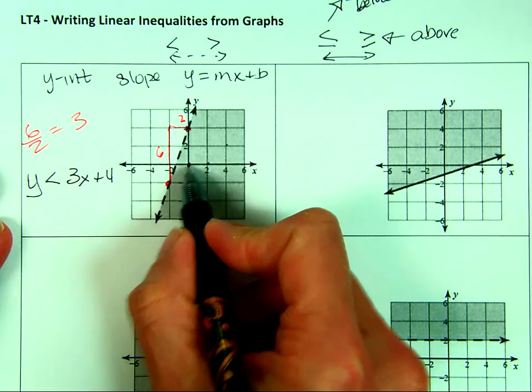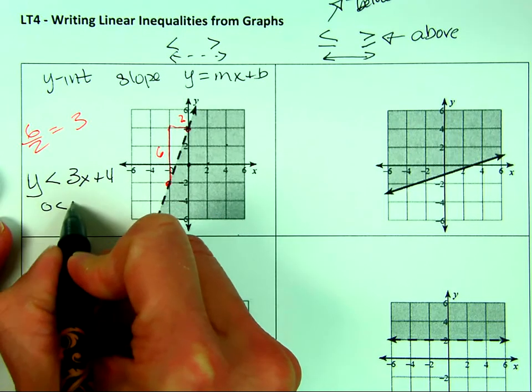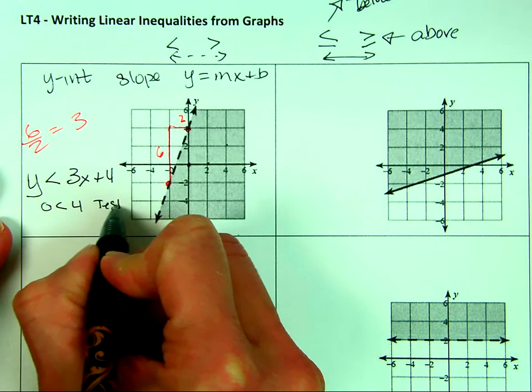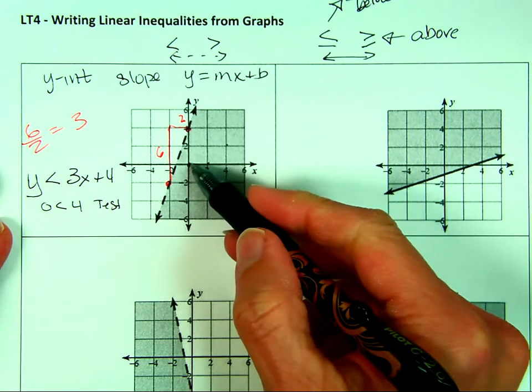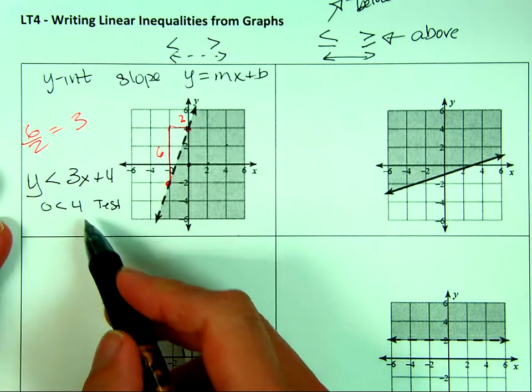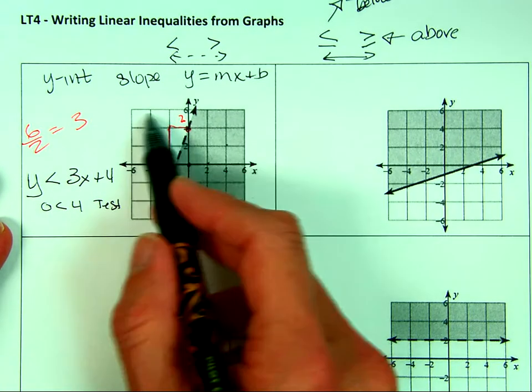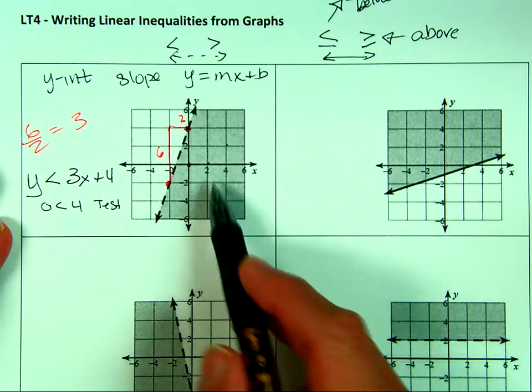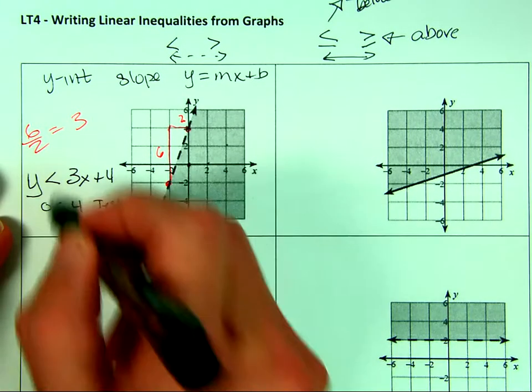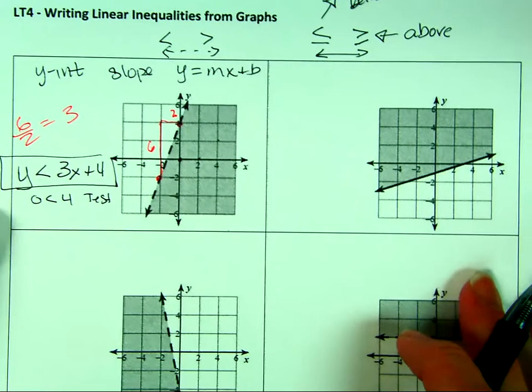So if I plug 0, 0 in here, I get 0 is less than 0 plus 4. And 0 is less than 4. This is my testing point. If I'm not sure about the below the line, above the line. So because that is true, I know that that is in the correct region. If I had put a greater than sign, it would have said 0 is greater than 4. It's not. 0 isn't bigger than 4. So this isn't included in the solution set, so I need the less than sign. This is the solution set. So this is my inequality. Notice I put a less than because it was dashed.